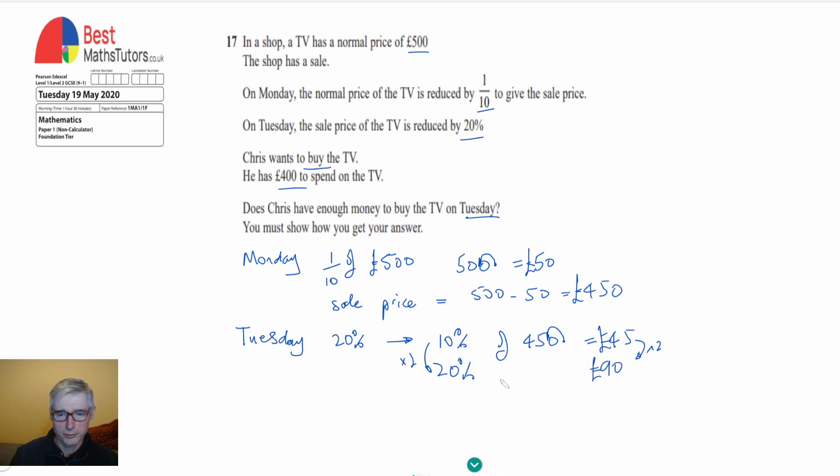So we can see that 20% of £450 is equal to 90 and now the sale price on the Tuesday is going to equal the £450 minus 90 and that's going to give us £360.